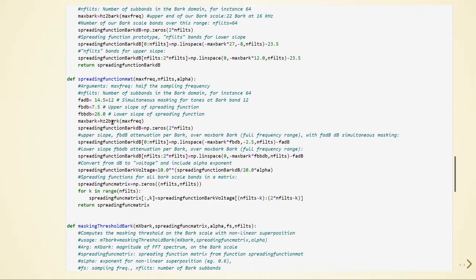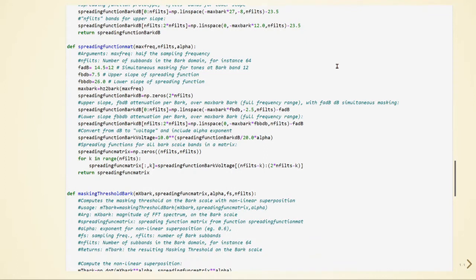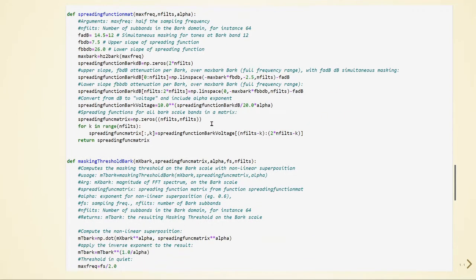Here we are using this Hertz sub-Bark function. We're also defining here the upper slope, so we have the attenuation per Bark in dB. We have the lower slope, the attenuation per Bark. And here finally we will get our matrix, the spreading function matrix.